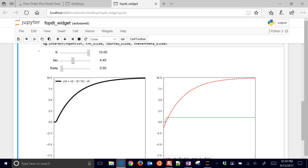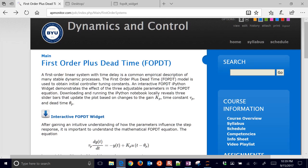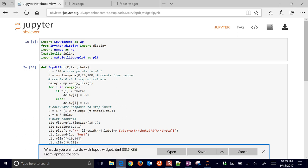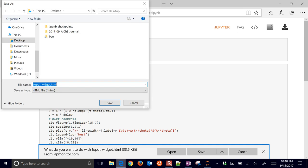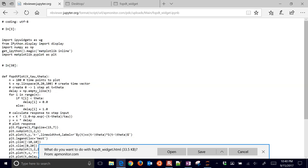So if you'd like to just get a feel for what these three constants do with the first order plus dead time, you can open up this widget that I have on this web page. Just download this interactive widget. When you select it, it will show it to you in this NB viewer. And when you download it, it will try to save it as an HTML file. You just have to rename it as a .ipynb file, ipython notebook file. And alternatively, you can just select the code and paste that into an ipython notebook.